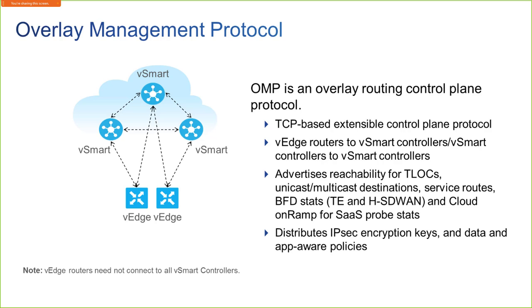Also included is the origin — this identifies the origin of the route, whether it was originated from BGP, OSPF, connected, or static. Then we have the metric of the original route, the originator IP address from where the route was propagated, the preference — if we have two OMP routes that exist, preference is used to identify which one is more preferred. The default value is zero, but the higher the preference is the one that's going to be more preferred. There's also a service field, a site ID, an optional tag for tagging and taking actions, and the VPN ID.